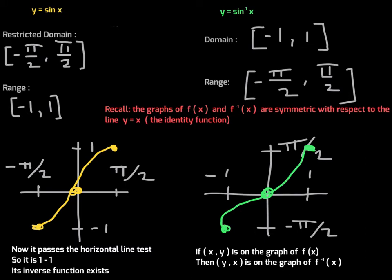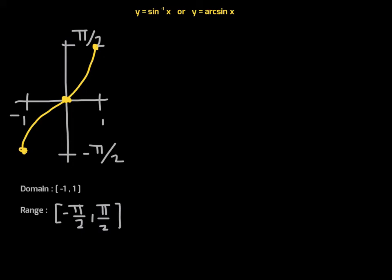So the curve for y equals inverse sine of x behaves accordingly — all we did was swap the coordinates from the sine graph and take the mirrored image with respect to y = x. For notation purposes, if you don't want to write inverse sine, you can write arc sine of x — both mean the same thing.